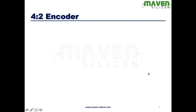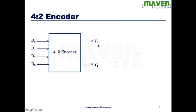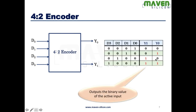Let's look at a 4-to-2 encoder. There are 4 inputs and 2 outputs. This is how the truth table looks: at a time, only one input is active high. When D0 is 1, you get output 0,0. When D1 is 1, you get 0,1. When D2 is 1, you get 1,0. When D3 is 1, you get 1,1. This is how it produces the equivalent binary.